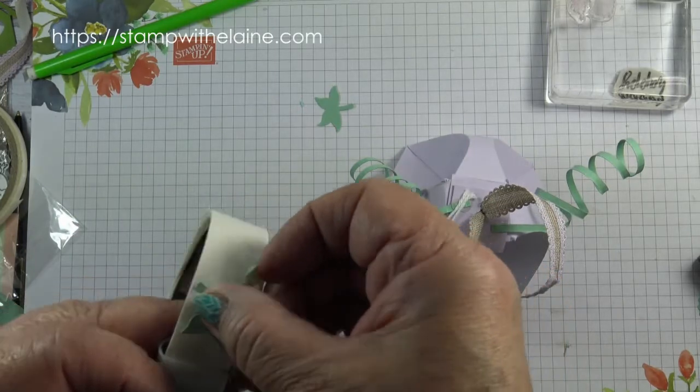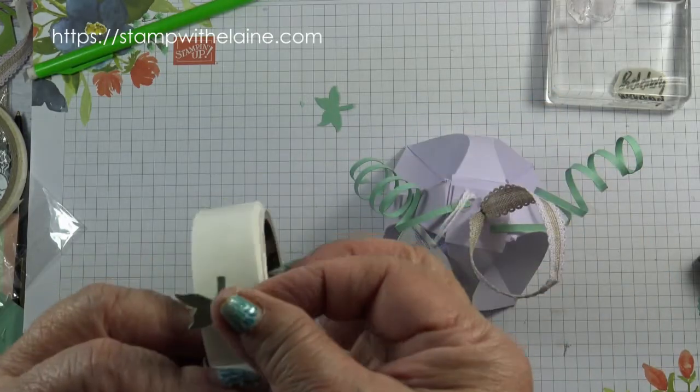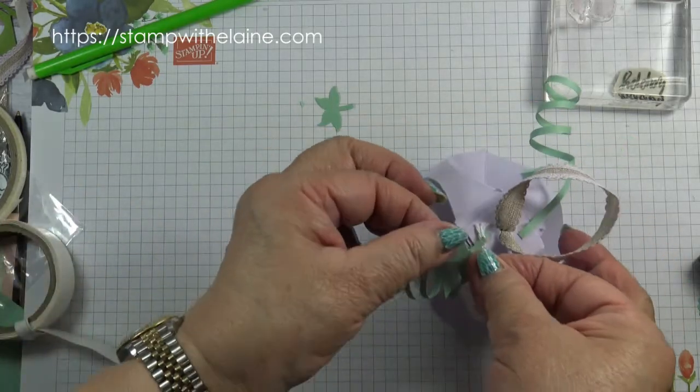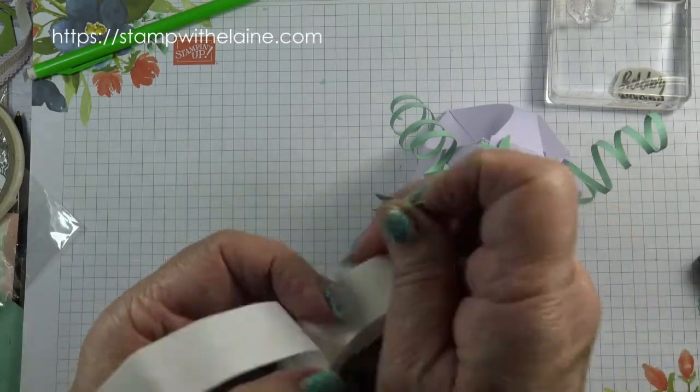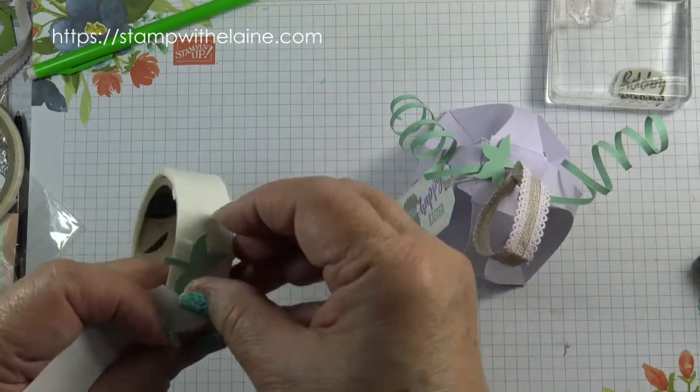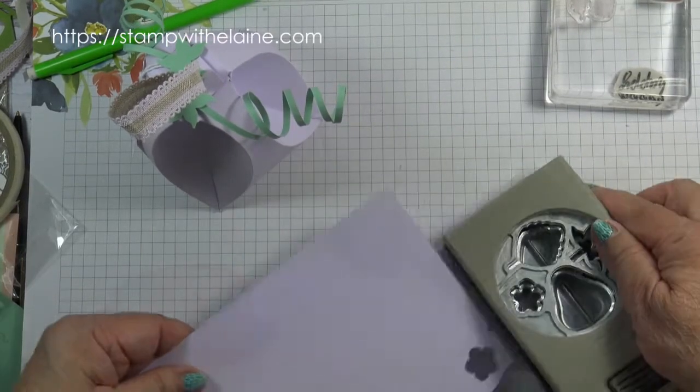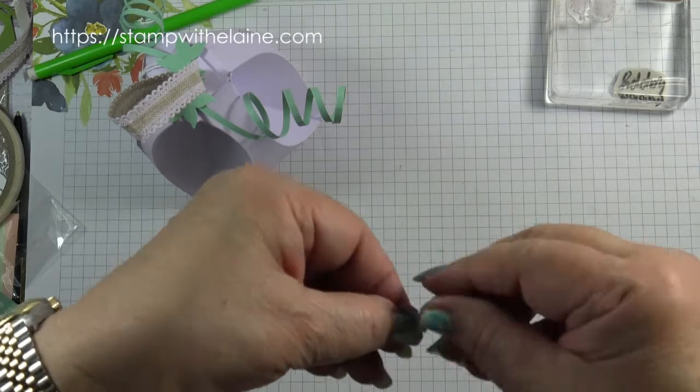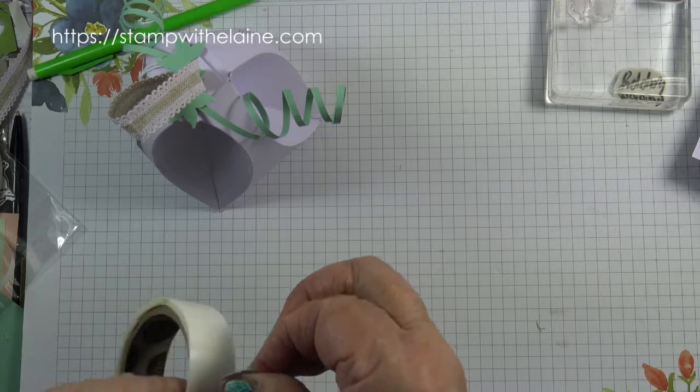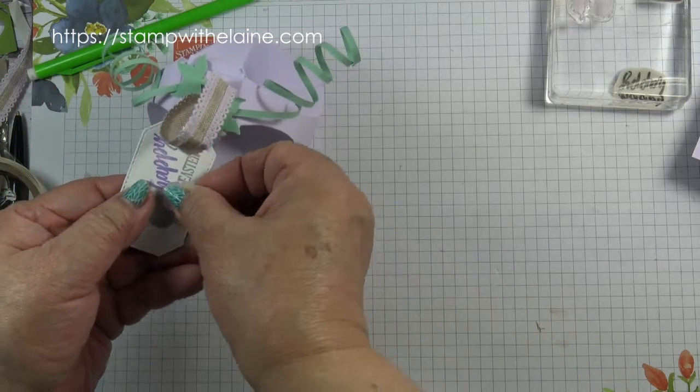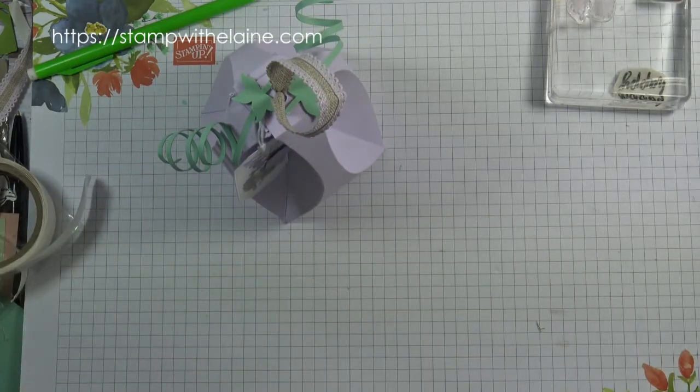Take twine and stick it on there. Pop several glue dots on the leaf and stick it on here. Then punch out a little flower. Squish up the petals. Pop it along there and finish off with a pearl.